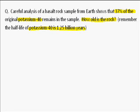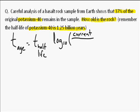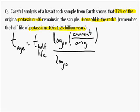So you might remember the formula that we use for this one. The time that is the age is equal to the time that is the half-life times log base 10 of the current amount over the original, all divided by the log base 10 of one-half.